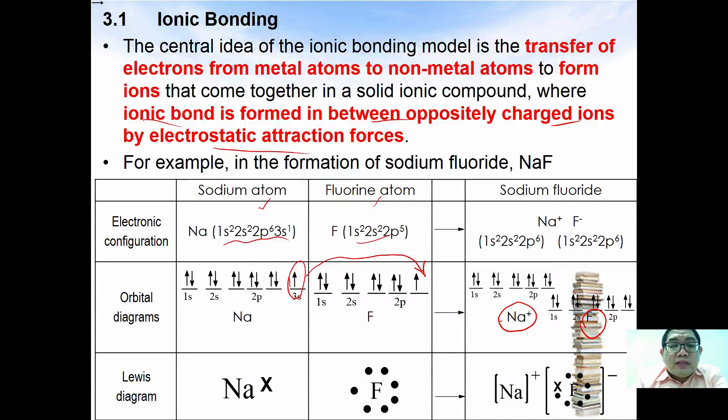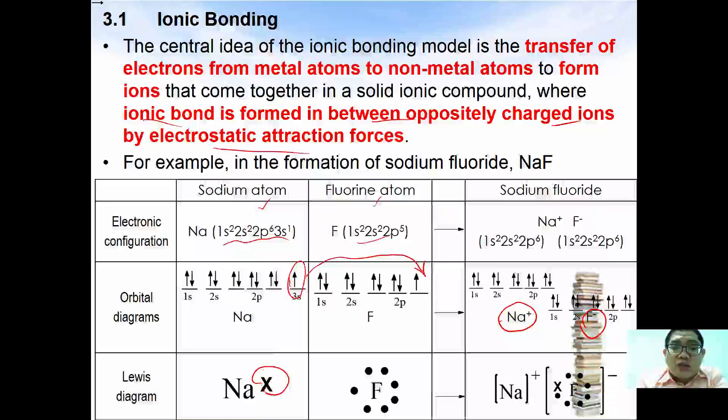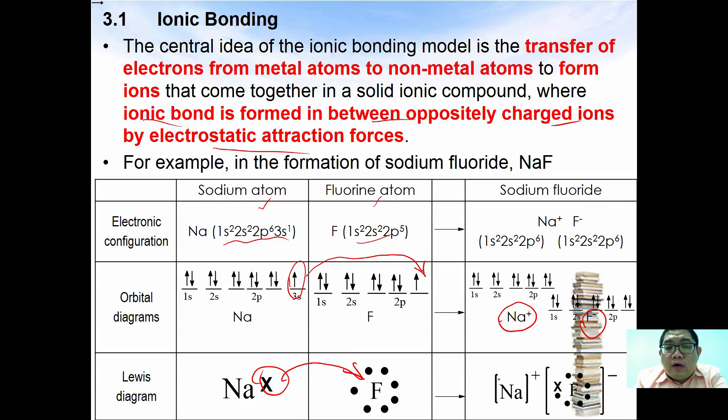In terms of the Lewis diagram, this is how we are going to express them. Sodium which has one valence electron donates the electron to the fluorine atom to form sodium ion and fluoride ion. Most of the time when we are expressing ionic compounds, this is what we are going to express.